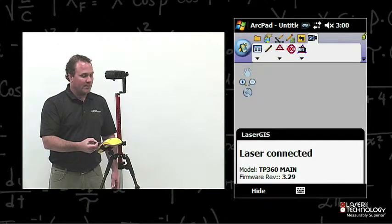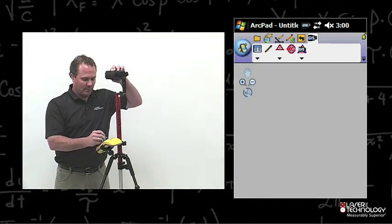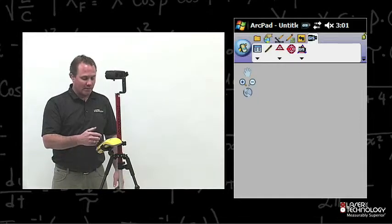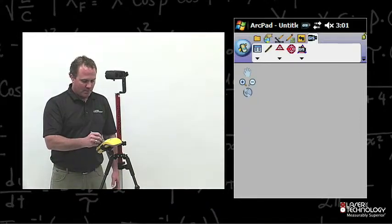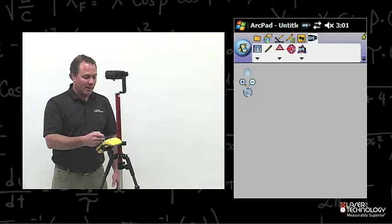As soon as the Range Finder is active, you're going to see the laser connecting. It's going to show you the TruePulse model and its firmware version. Once the Range Finder is active, it takes you back to the main map, and we want to go back into Project Setup.